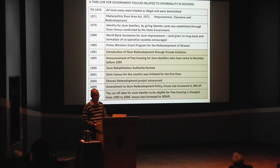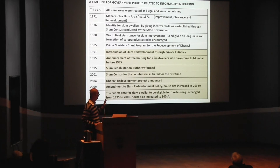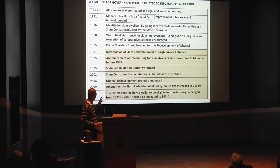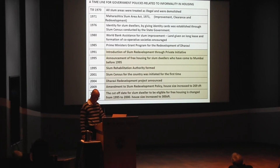Just to give you an understanding of how the government has looked at informality and informal housing from 1970 to 2014: in 1970, all slums were considered illegal and had to be removed. Slowly, with pressure from citizen groups, the government changed that approach — saying they can't remove them, they have to improve them. Improvement was first introduced in 1991, exactly when liberalization happened, and that's when private funding in slum redevelopment came in. The Dharavi development project came in 2004.